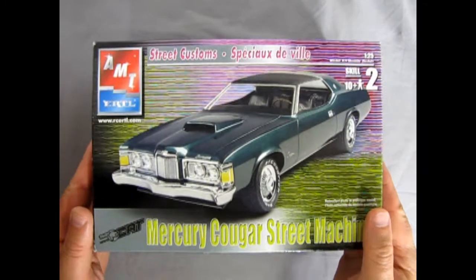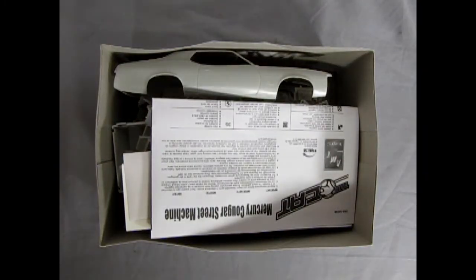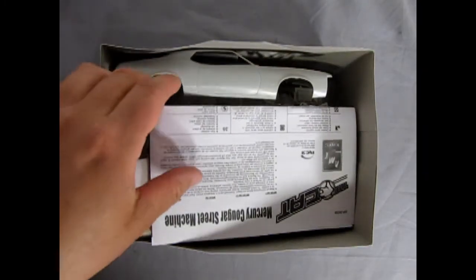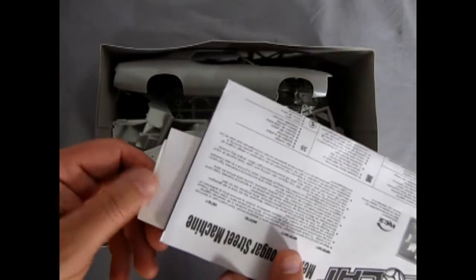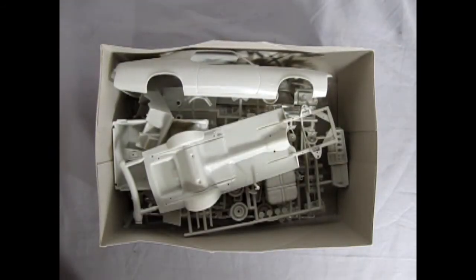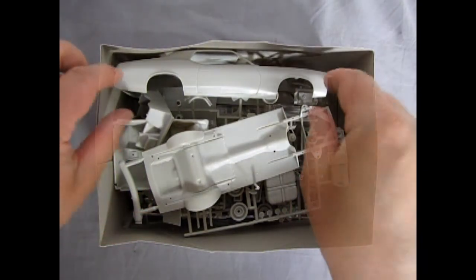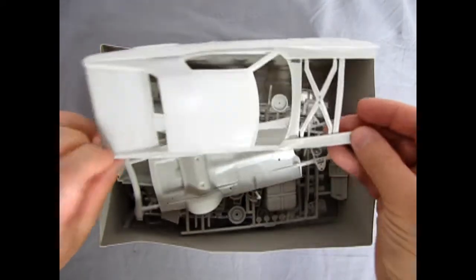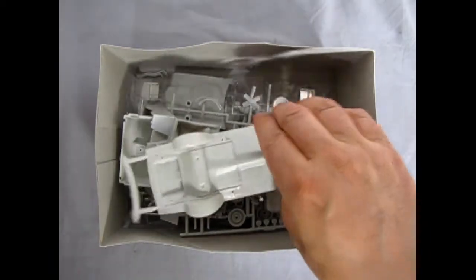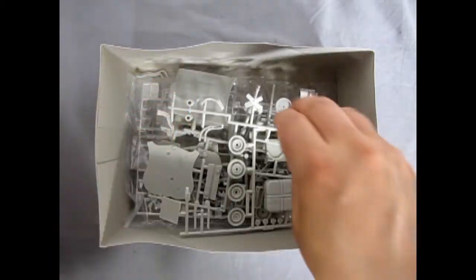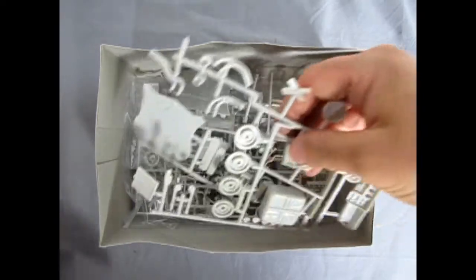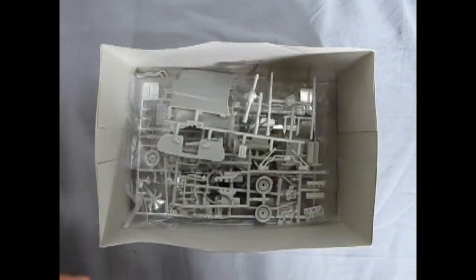If we remove the lid on this wonderful machine, you can see all the great details inside the box like our Mercury Cougar instructions with our decals sticking out. We can take a look at that toward the end of the video. Then you see all the great components in here like our body, our chassis, the interior,